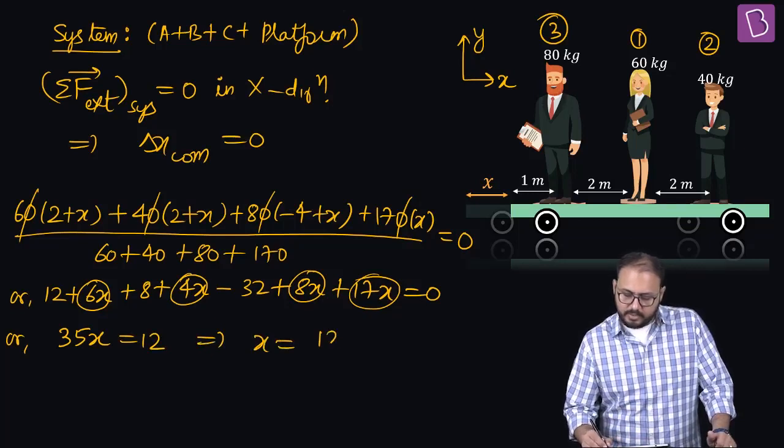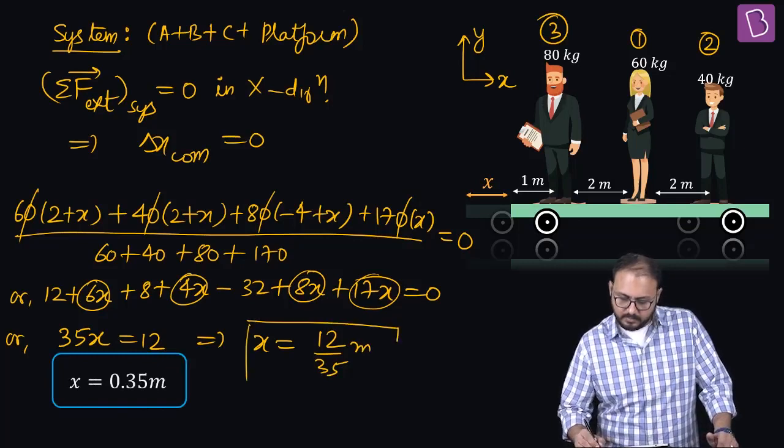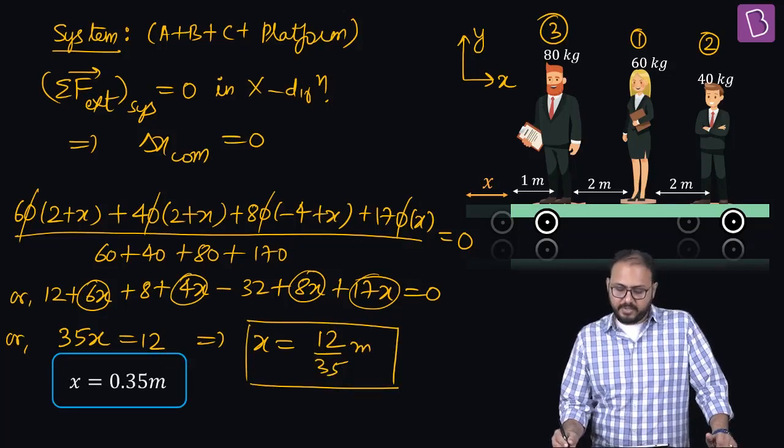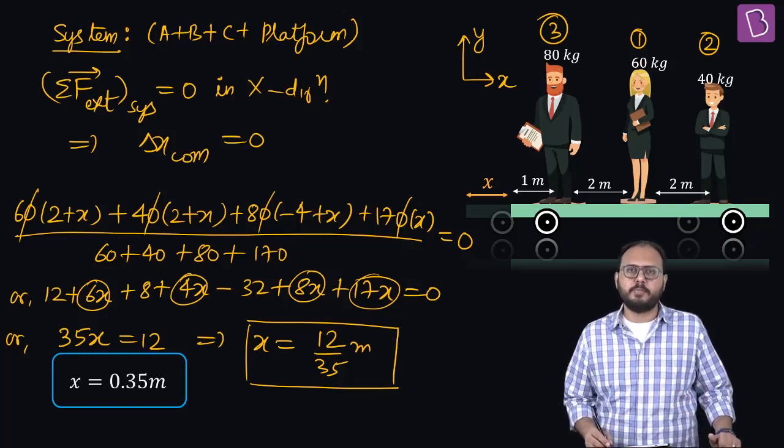I am getting 12 by 35 meters. Let's see what's the answer. 12 by 35 meters, approximately 0.35 meters. Yeah, approximately 0.35.